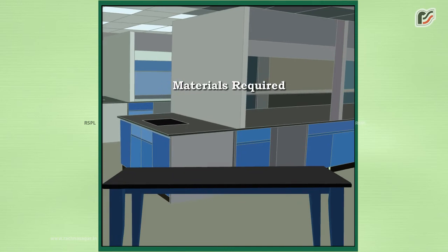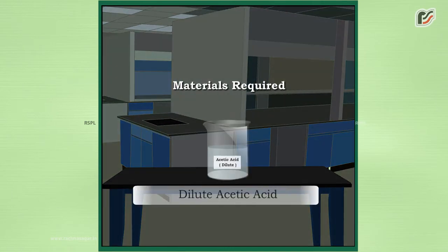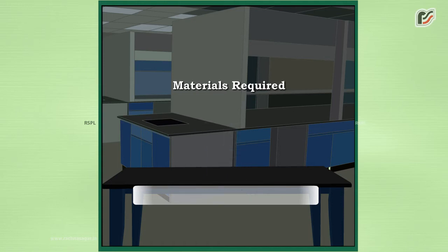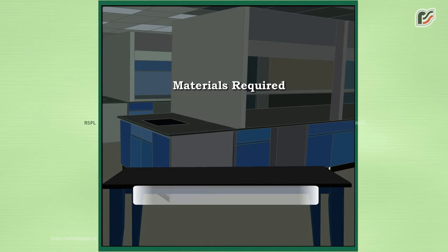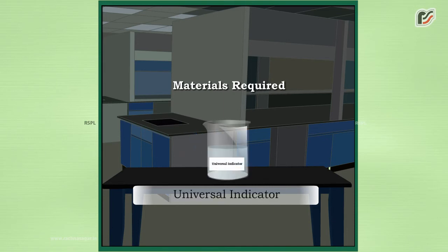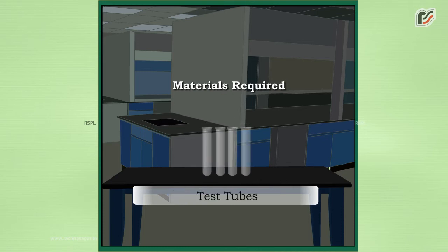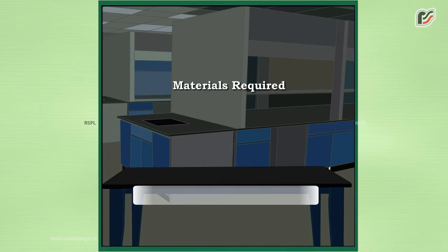Materials required: dilute acetic acid, dilute hydrochloric acid, blue litmus paper, universal indicator, test tubes, test tube stand, and dropper.